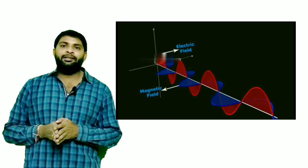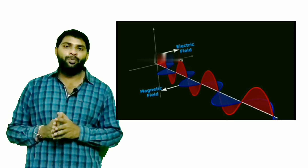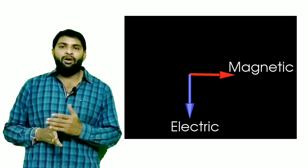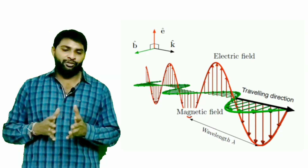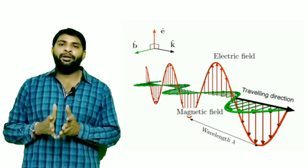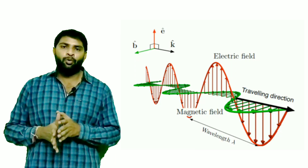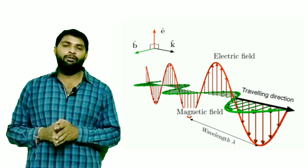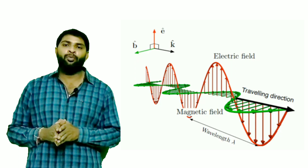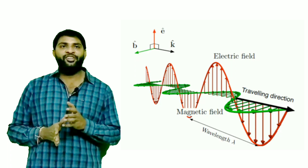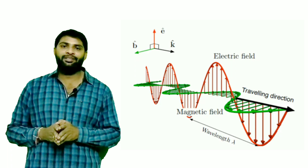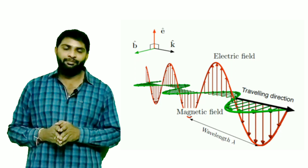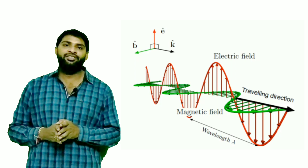In electromagnetic radiation, the electric field and magnetic field produced by the oscillation of charged particles are perpendicular to each other, and are also perpendicular to the direction of propagation of the wave. The vertical component of the wave indicates the change in the strength of the electric field, and the horizontal component indicates the change in the strength of the magnetic field. By convention, only the vertical component of the wave is considered.